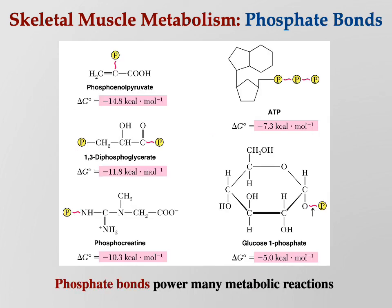ATP is not the only high-energy phosphate molecule. Others include phosphoenolpyruvate, 1,3-diphosphoglycerate (also called bisphosphoglycerate), phosphocreatine, and glucose-1-phosphate. Notice they all contain phosphate bonds — those high-energy bonds are what drive reactions inside your body. More on this in the next PowerPoint.